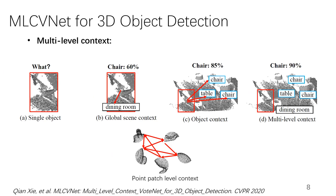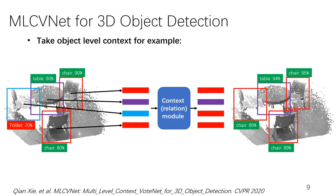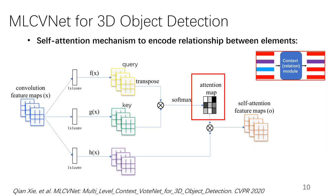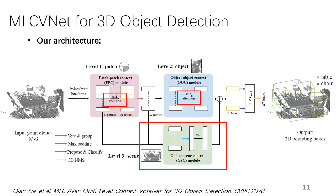Actually, context information here can be seen as the relationship between elements. If you know the surrounding objects, the detection results could be more accurate. We use the self-attention mechanism to encode relationship between elements here.